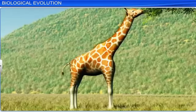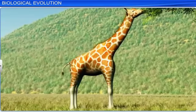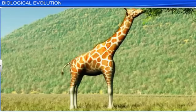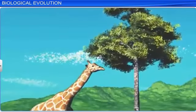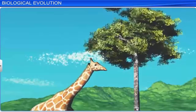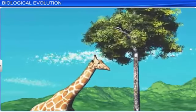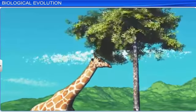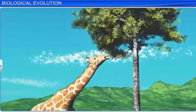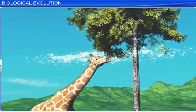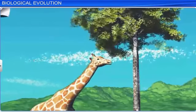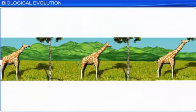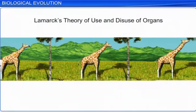Lamarck had conjectured that giraffes had adapted themselves and elongated their necks while trying to eat the leaves of tall trees. Over millions of years, giraffes had made optimum use of their necks and passed on the character of a long neck to future generations. Consequently, giraffes developed long necks over millions of years. However, Lamarck's theory about the use and disuse of organs is not accepted anymore.